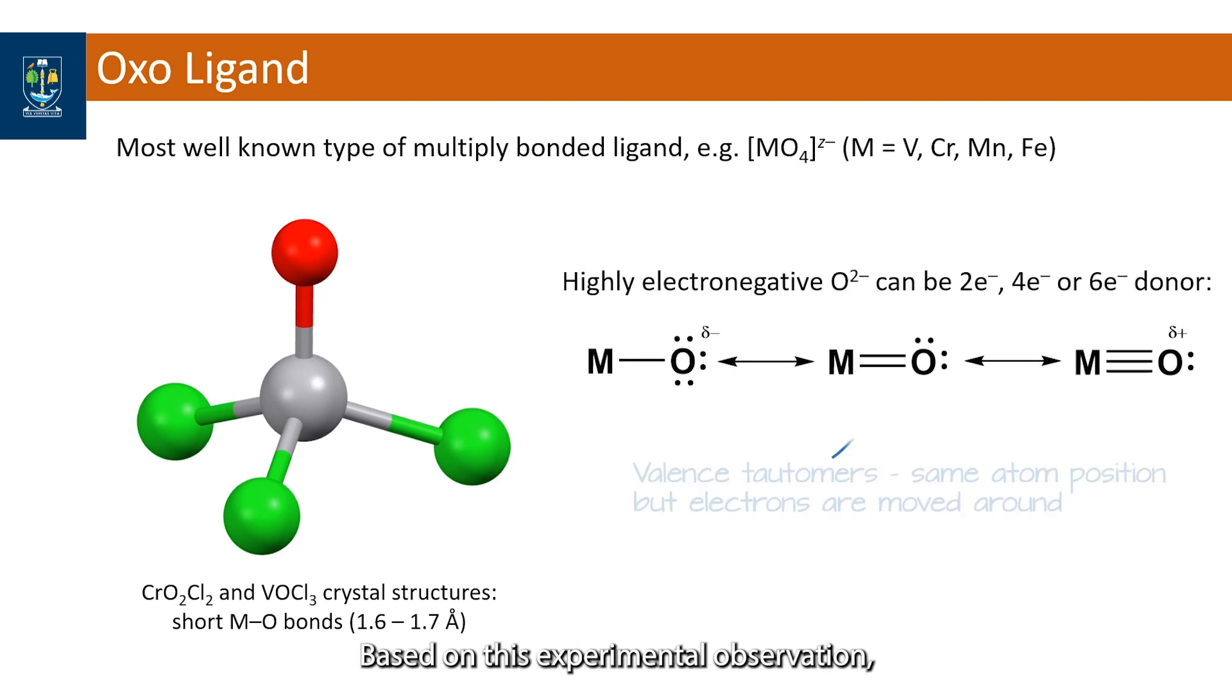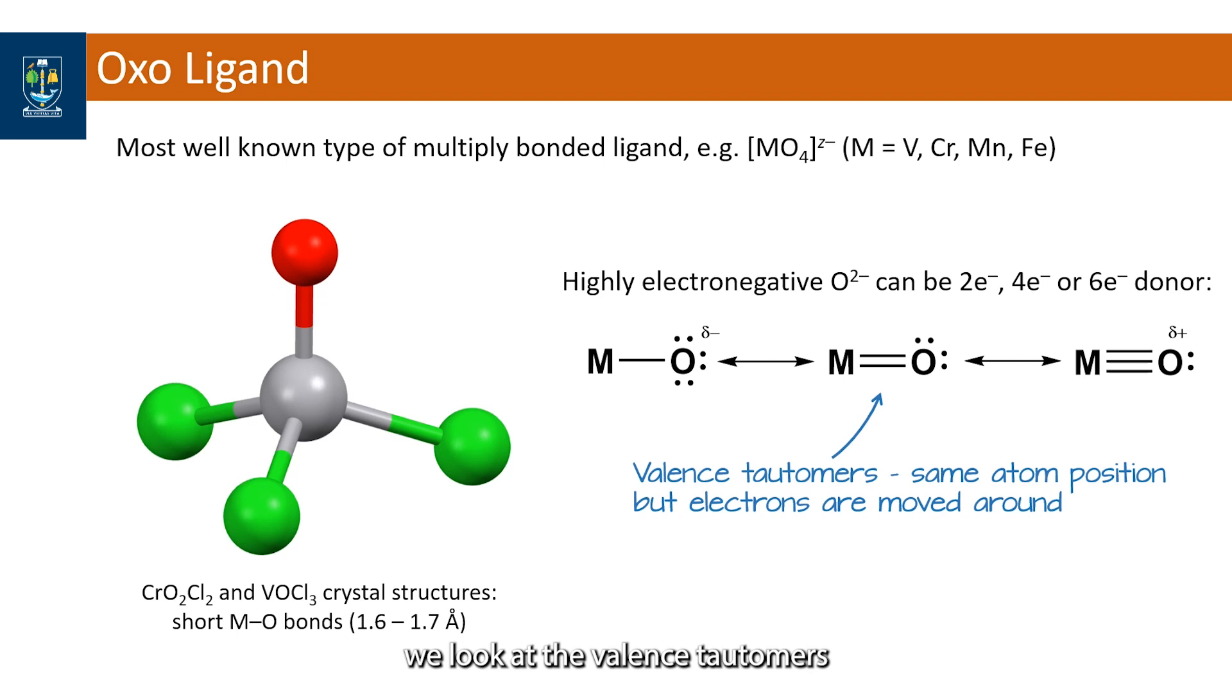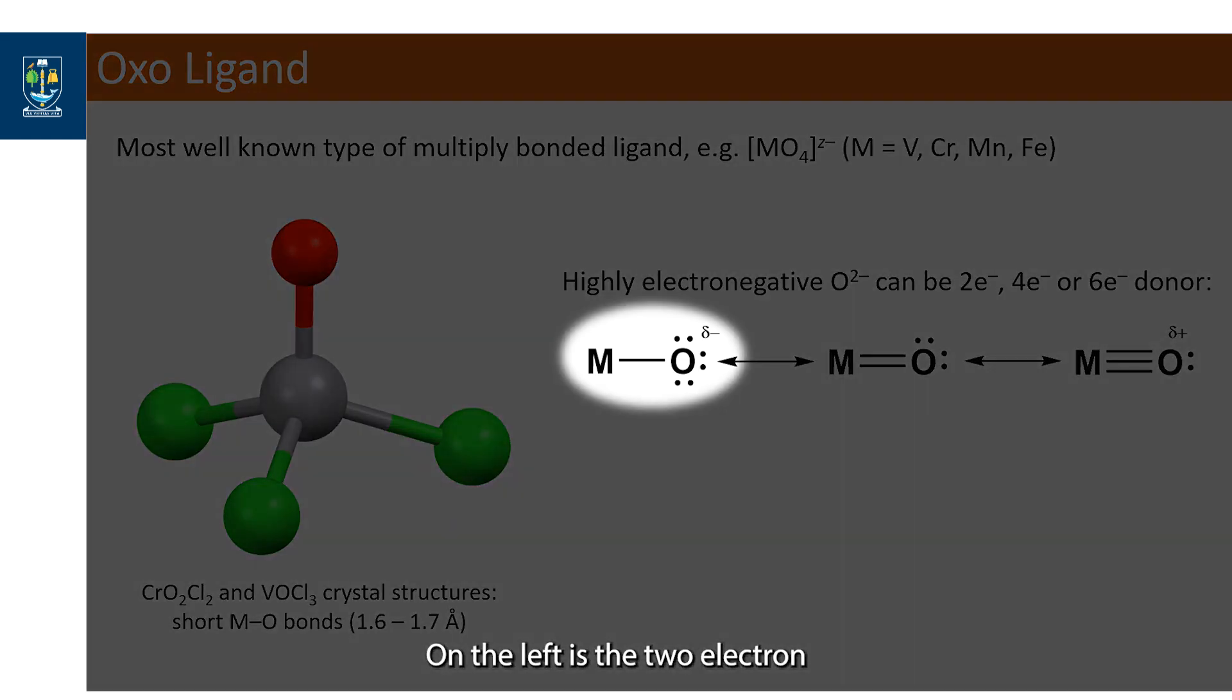Based on this experimental observation, we look at the valence tautomers as shown here as resonance structures for the metal oxo unit. On the left is the two electron donor where a lone pair is donated from the oxygen atom to make a single bond with the metal.